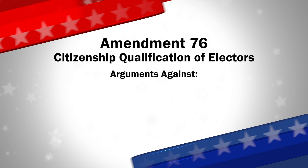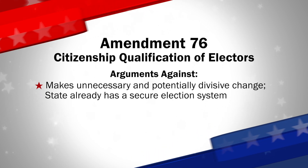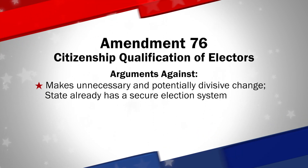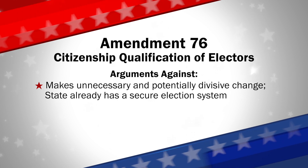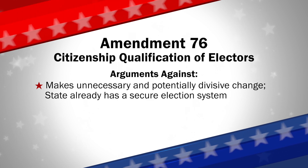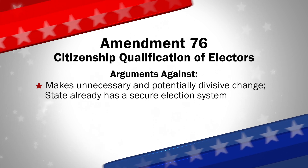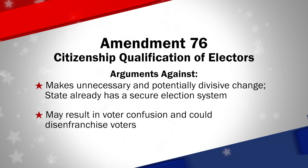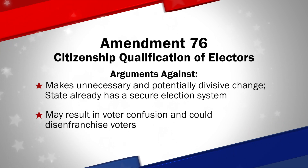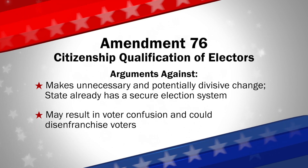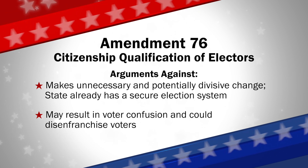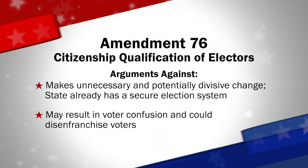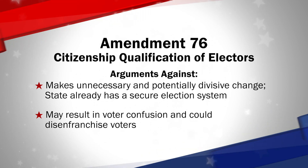Opponents say Amendment 76 makes an unnecessary and potentially divisive change. The state already has a secure election system that ensures only those who meet legal requirements can vote in elections. Ultimately, the measure seeks to solve a problem that does not exist, may result in voter confusion about state and local elections, and could discourage and even disenfranchise voters.